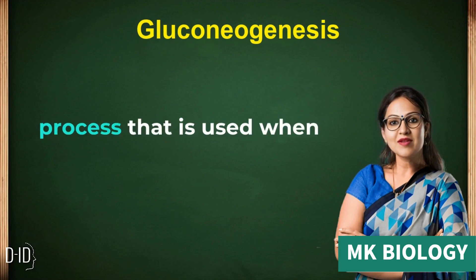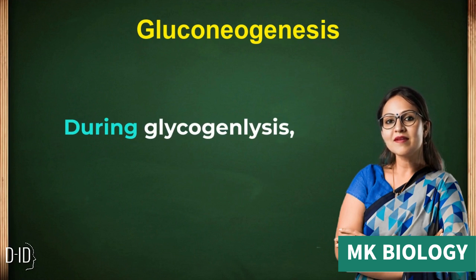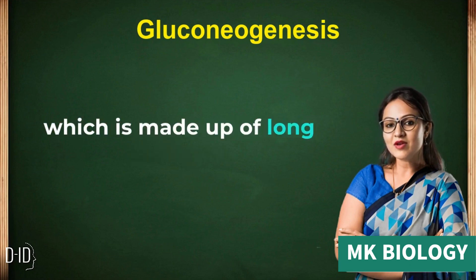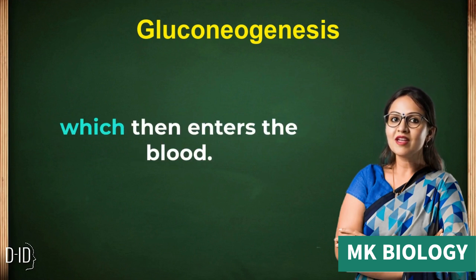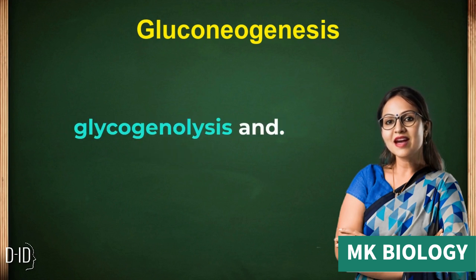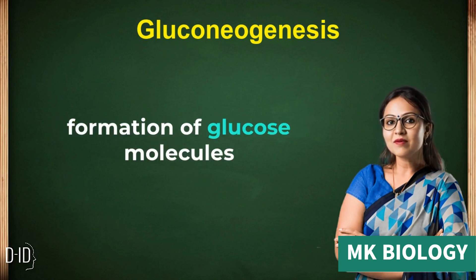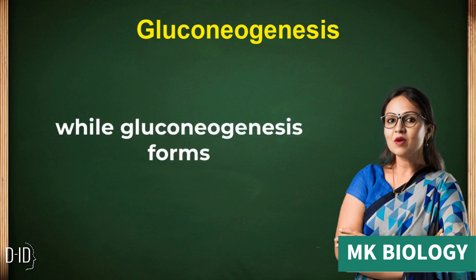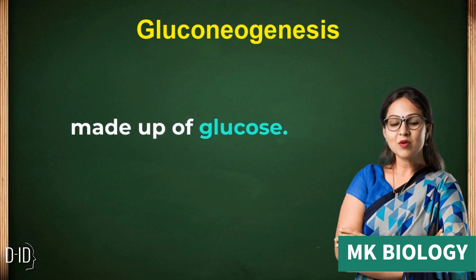Glycogenolysis is another process that is used when glucose levels in the blood are low. During glycogenolysis, the storage molecule glycogen, which is made up of long chains of glucose, is broken down into glucose, which then enters the blood. The main difference between glycogenolysis and gluconeogenesis is that glycogenolysis involves the formation of glucose molecules from a glucose source, glycogen, while gluconeogenesis forms glucose from non-glucose sources — molecules that are not made up of glucose.